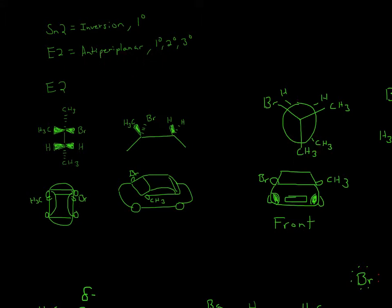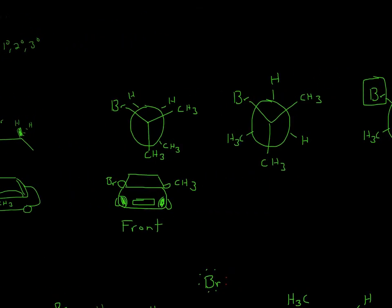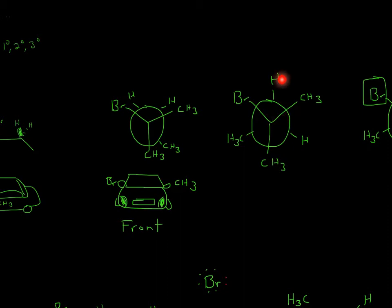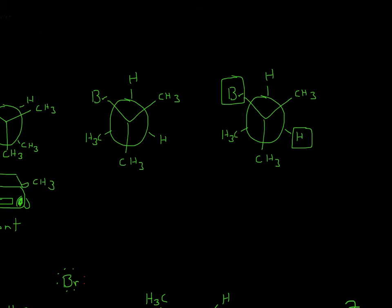We need it to be anti-periplanar for E2 to happen, meaning one of the hydrogens has to be diagonal from the bromine. So I keep the front circle the same — Br, CH3, CH3 — and rotate the hydrogen to be diagonal from the bromine. The H comes directly vertical and the CH3 comes to the right. Now H and Br are horizontal from each other, and we have what we wanted: anti-coplanar.